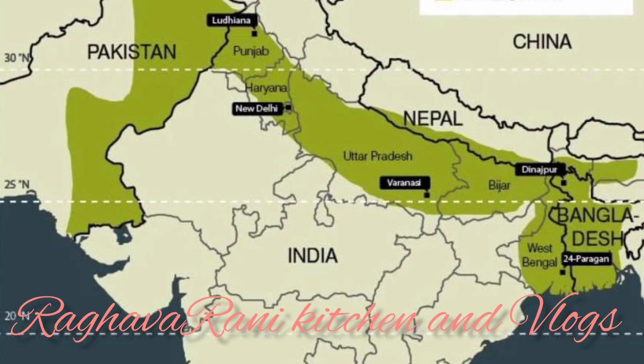The Lakshadweep Islands have a coral origin. Their geographic area is 32 square kilometers. This group of islands is famous for its flora and fauna.